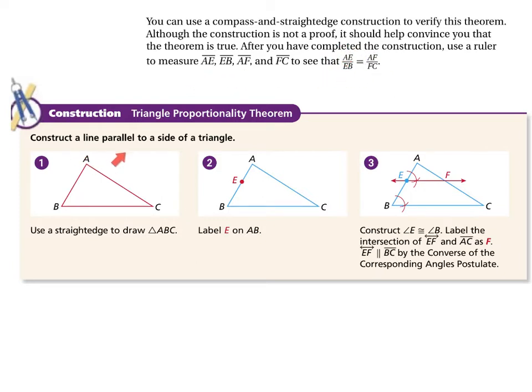Here's what you would do. You would use a straight edge to draw a triangle. The second step is to draw any point that you want on one of the sides. In this case, we have a point E labeled as E on the length AB.